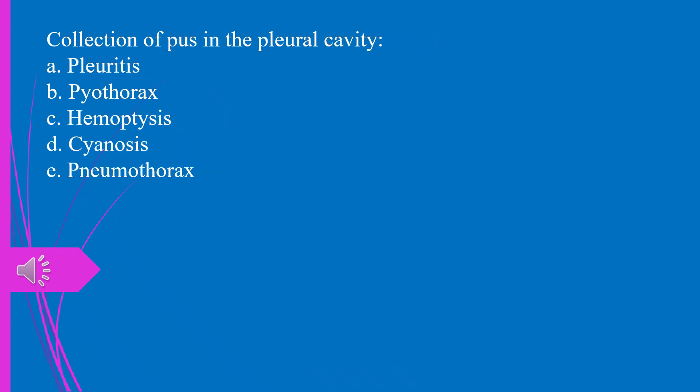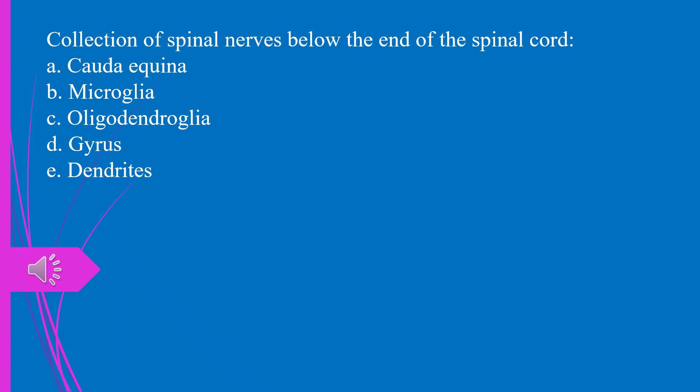Collection of pus in the pleural cavity, A. Pleuritis. B. Pyothorax. C. Hemoptysis. D. Cyanosis. E. Pneumothorax. The answer is B. Pyothorax.